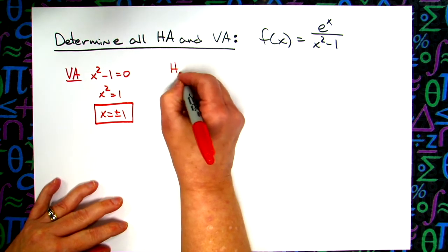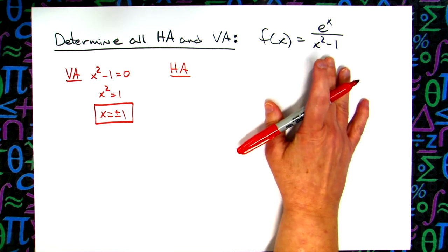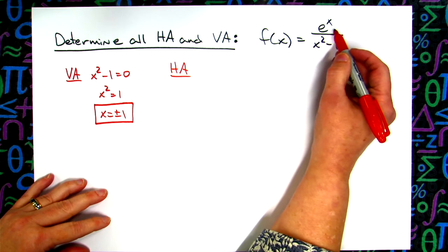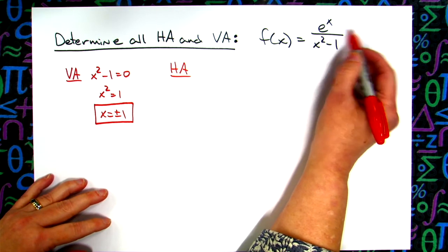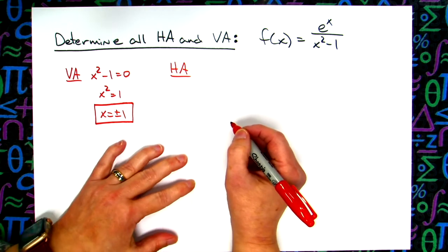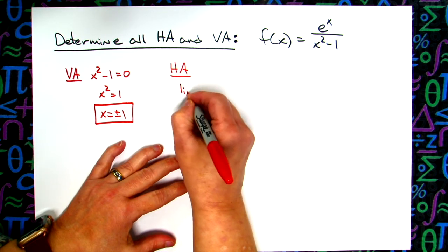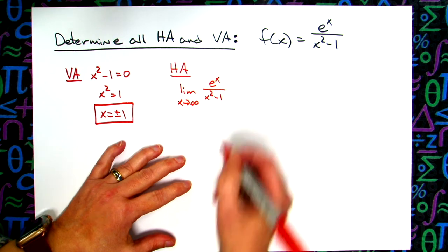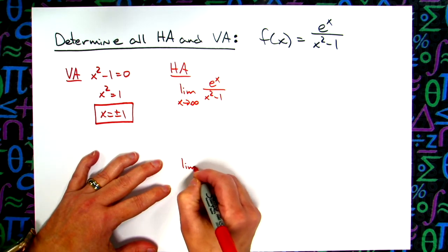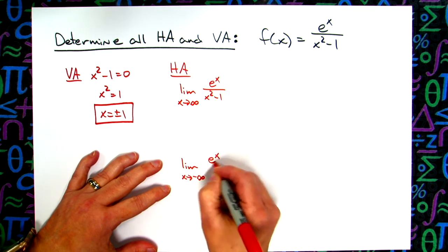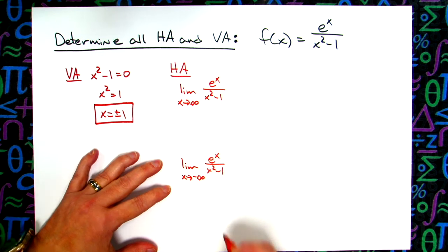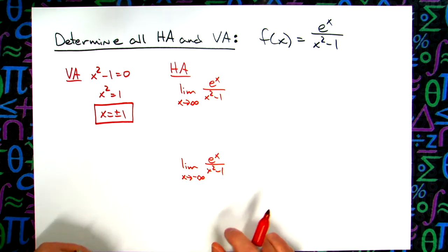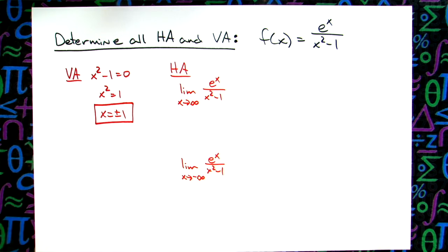Now for the horizontal asymptotes — there are shortcuts for finding horizontal asymptotes of rational functions, however this one won't lend itself to that method because the numerator is not a polynomial. So what we're going to do is take a look at the limit as x approaches positive infinity of e^x over x² - 1, and also the limit as x approaches negative infinity. When a function doesn't fit the shortcuts, you take a look at both of those limits.